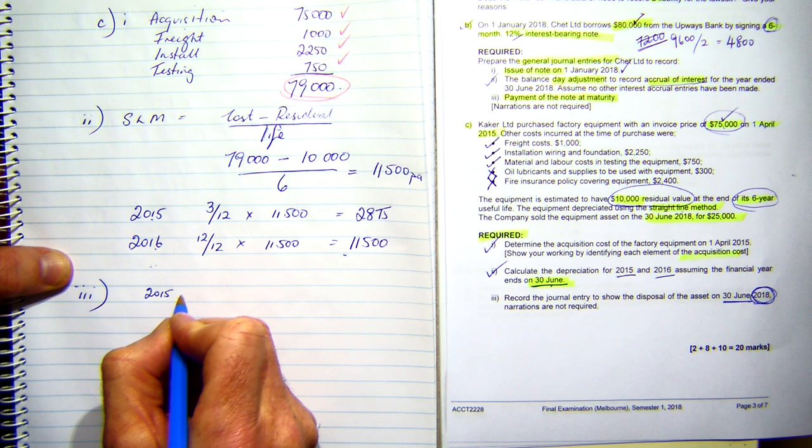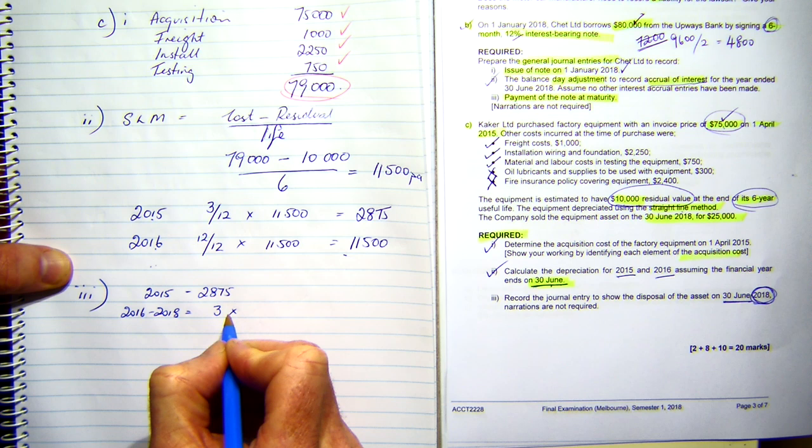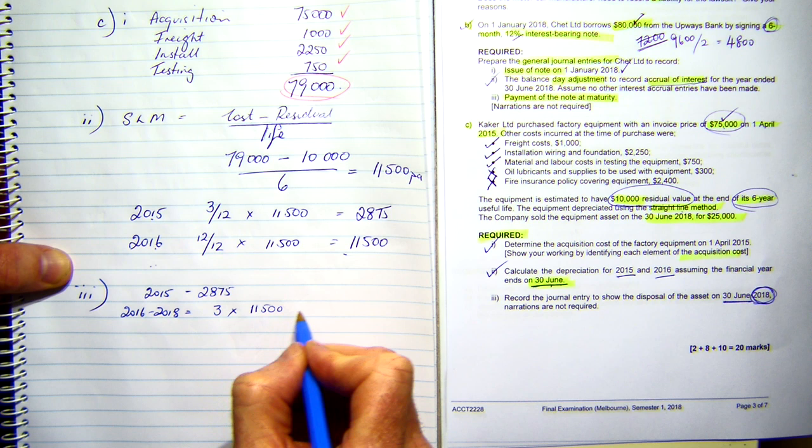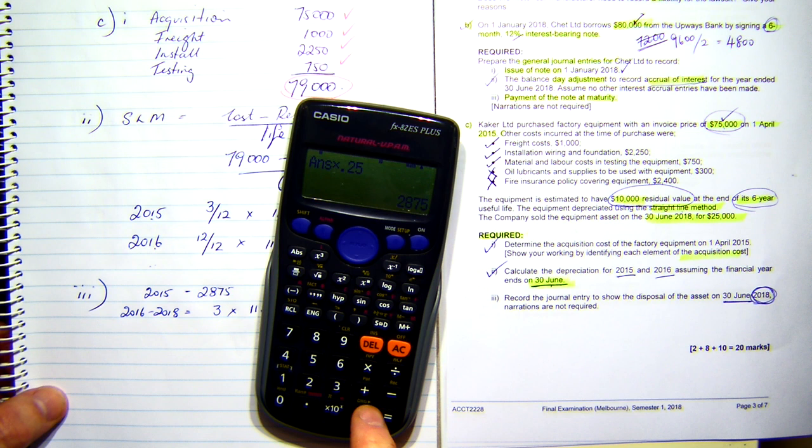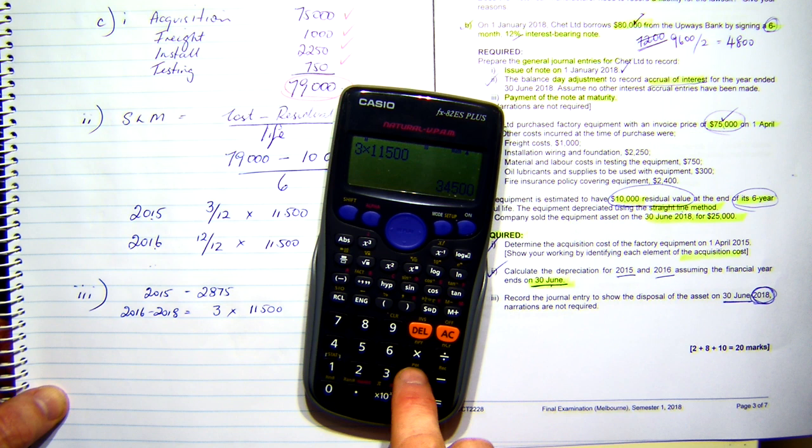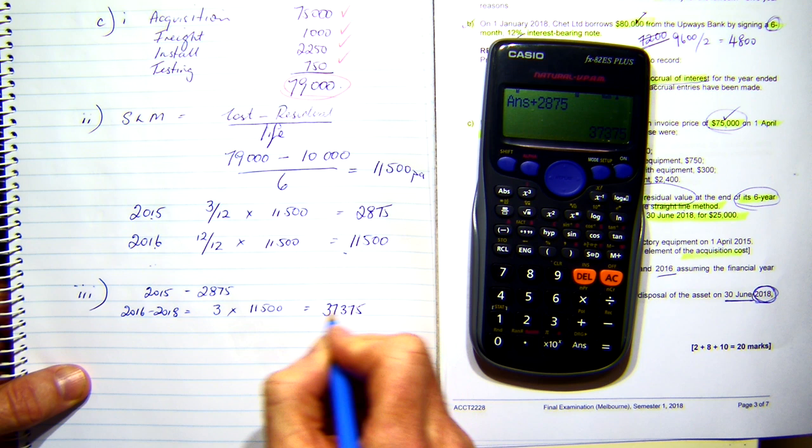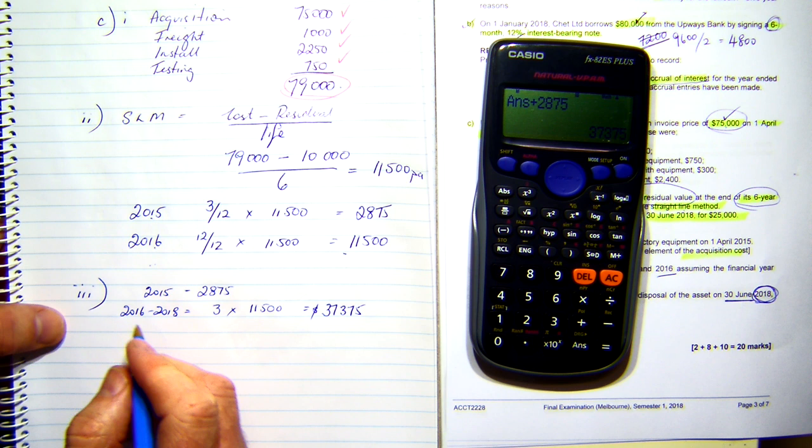I've got 2015 equals $2,875. And then from 2016 to 2018 equals three times 11,500. My depreciation should be... Three times 11,500 equals 34,500 plus 2,875 equals $37,375. That's my depreciation for the full three periods.